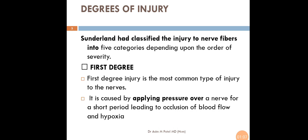First Degree of Injury is the most common type of injury to the nerves. It is caused by applying pressure over a nerve fiber for a short period leading to occlusion of blood flow and hypoxia.